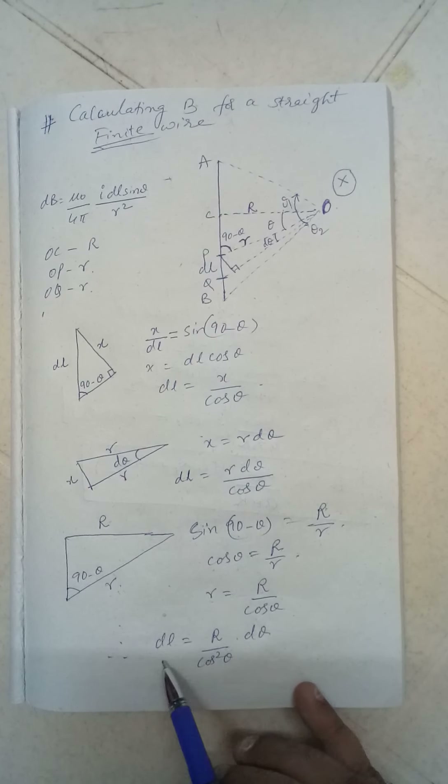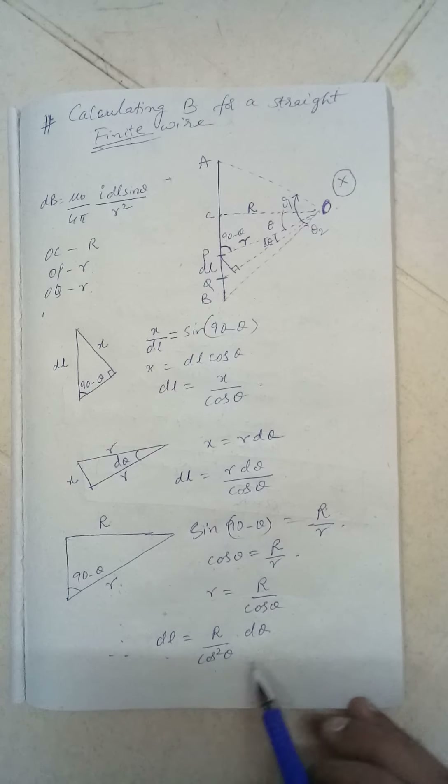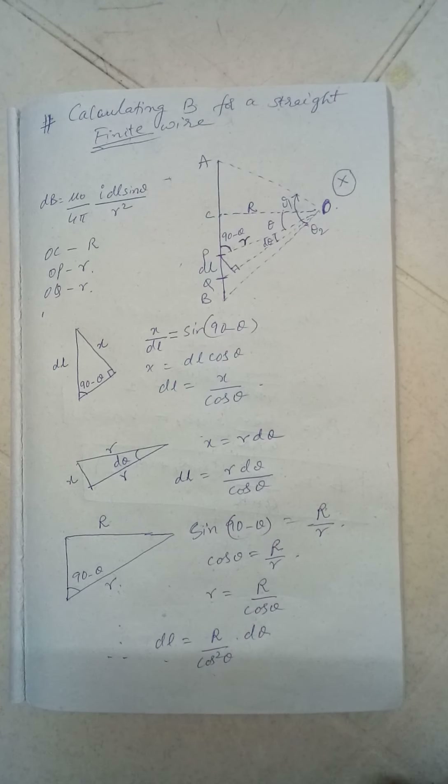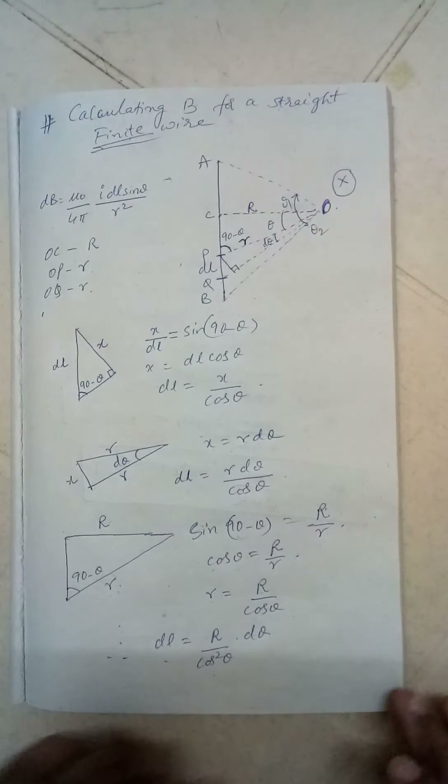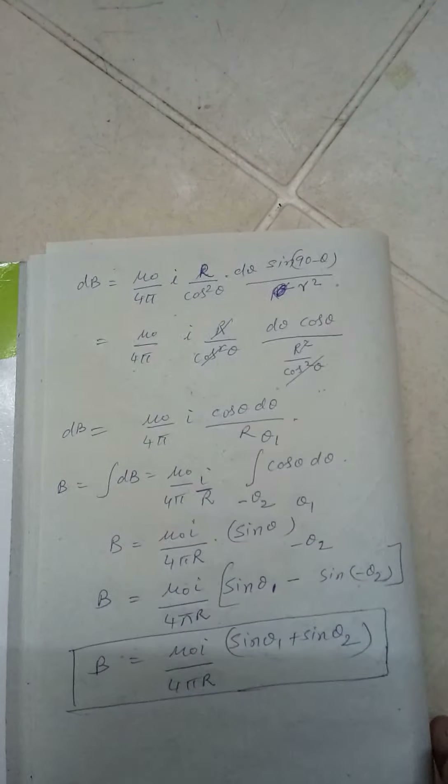Finally, DL equals (capital R divided by cos squared theta) times d theta. Now we can write the full equation: dB equals mu 0 by 4 pi, times I, times (R by cos squared theta) d theta, with sine theta being the angle between the r vector and the L vector — which is sine of (90 minus theta) in our case.